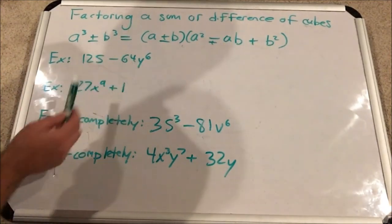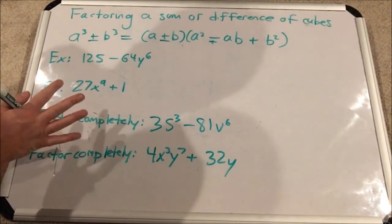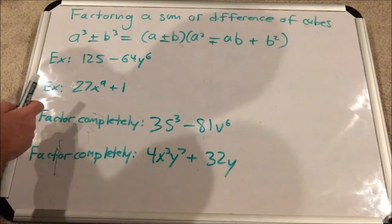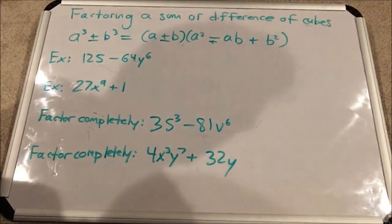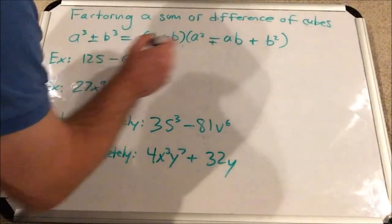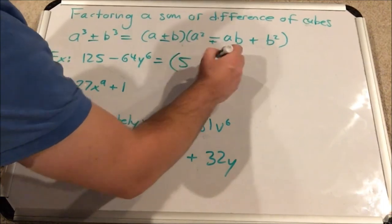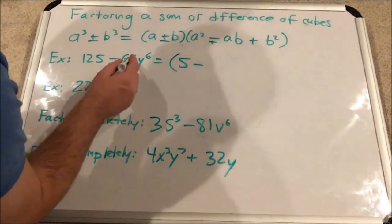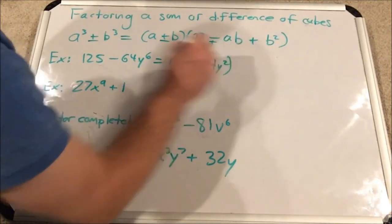What about 64 and y to the 6? 64 does have a cube root. I know it has a square root of 8, but it has a cube root also of 4. Y to the 6, cube root is y squared. All right. So this factors with the difference of cubes. So let's do it. Keep the same sign, write the cube root of each term with a minus sign in the middle. So that's 4y squared.